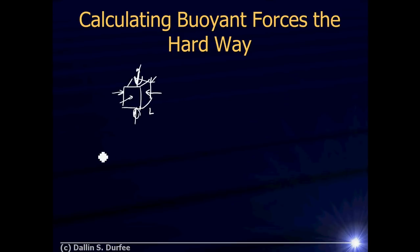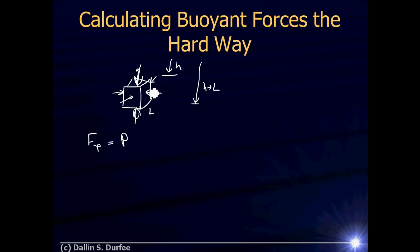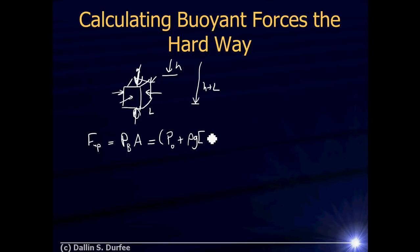Let's calculate the upward force first. That's going to be the pressure at the bottom times the area. Let's let the top be at some depth h, which means the bottom will be at depth h plus L — it's one side length of the cube lower. So it's going to be the pressure at the bottom times the area. Last time we derived that the pressure at a given depth is atmospheric pressure plus rho times g times how far down you are, and for the bottom that is h plus L. So that's the pressure at the bottom multiplied by the area at the bottom.